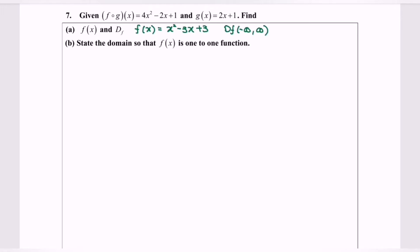Hello everyone, so now I'm going to discuss part B: state the domain so that the function f(x) is one-to-one function. As we all know, or previously we already discussed, for the quadratic situation it is not a one-to-one function. So now based on the domain we have to determine f(x) is one-to-one.